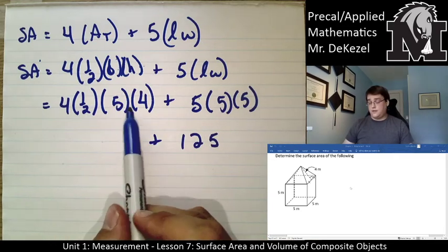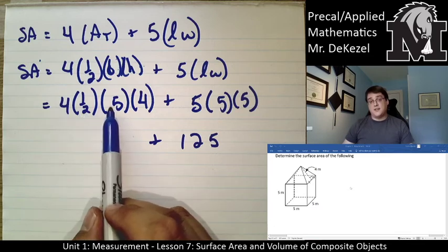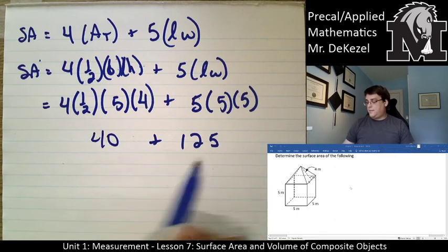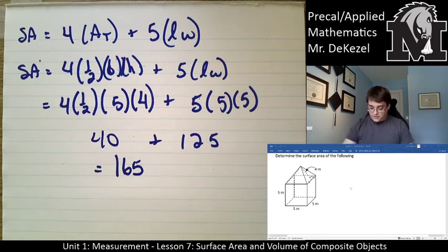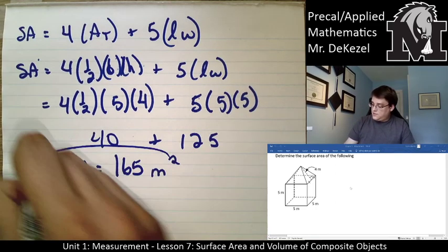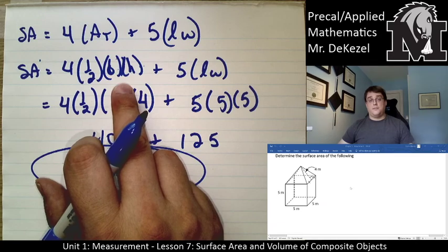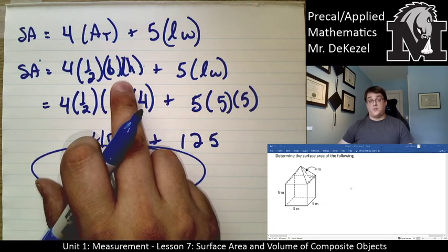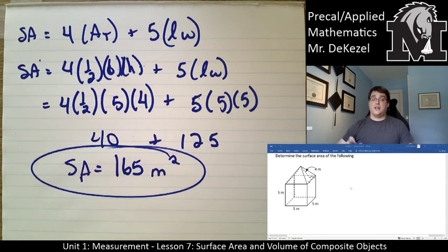Working through the arithmetic: 4 divided by 2 is 2, times 5 is 10, times 4 is 40, plus 125 equals 165 meters squared, because we're talking about surface area. An important note: when talking about surface area of a pyramid, use the slant height; when talking about volume, use the perpendicular height of the pyramid. It's really easy to get confused between the two.